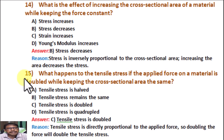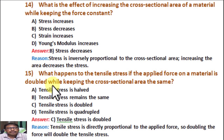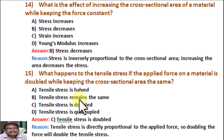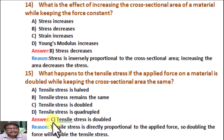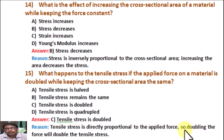Question number 15. What happens to the tensile stress if the applied force on a material is doubled while keeping the cross-sectional area the same? Option A: Tensile stress is halved. Option B: Tensile stress remains the same. Option C: Tensile stress is doubled. Option D: Tensile stress is quadrupled. Correct answer is C: Tensile stress is doubled. Reason: Tensile stress is directly proportional to the applied force, so doubling the force will double the tensile stress.